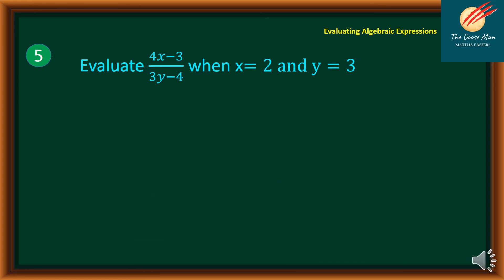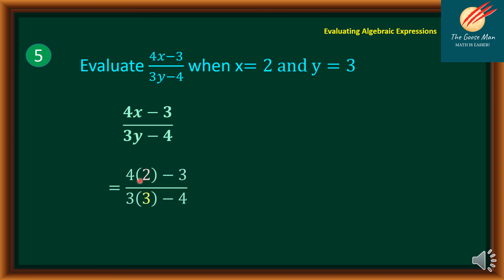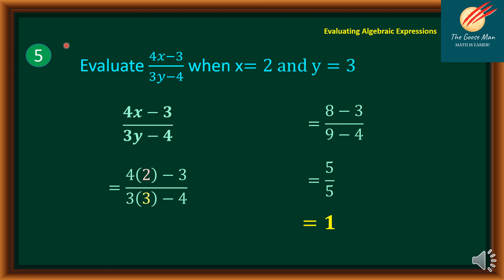Let's try another example. Evaluate (4x − 3) all over (3y − 4) when x equals 2 and y equals 3. Write down the expression and plug in the given values. So 4 times 2 gives 8 minus 3 in the numerator, while 3 times 3 gives 9 minus 4 in the denominator. That gives us 5 over 5, which equals 1. That ends our discussion on evaluating algebraic expressions.